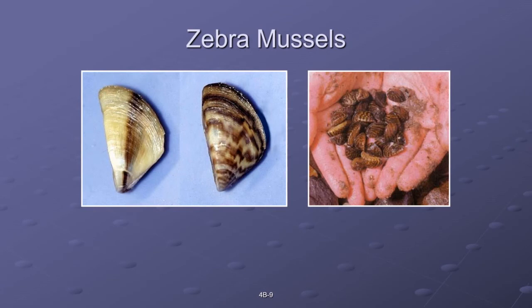Next up is the infamous zebra mussel, which most of us have heard of. They can live out of water for up to a month if not subjected to heat or extreme drying conditions — therefore they're easily transported. They threaten native fish and wildlife by consuming available food and smothering native species. They can grow up to two inches.